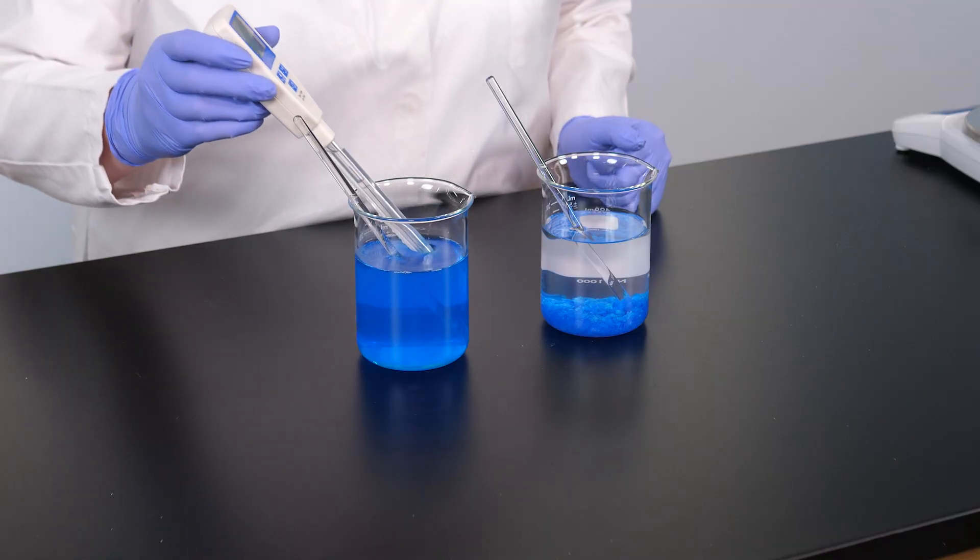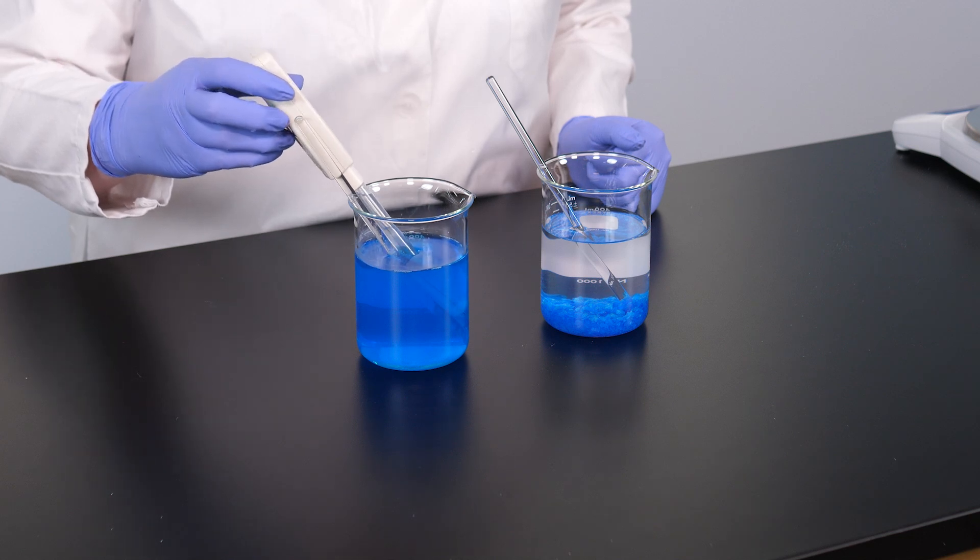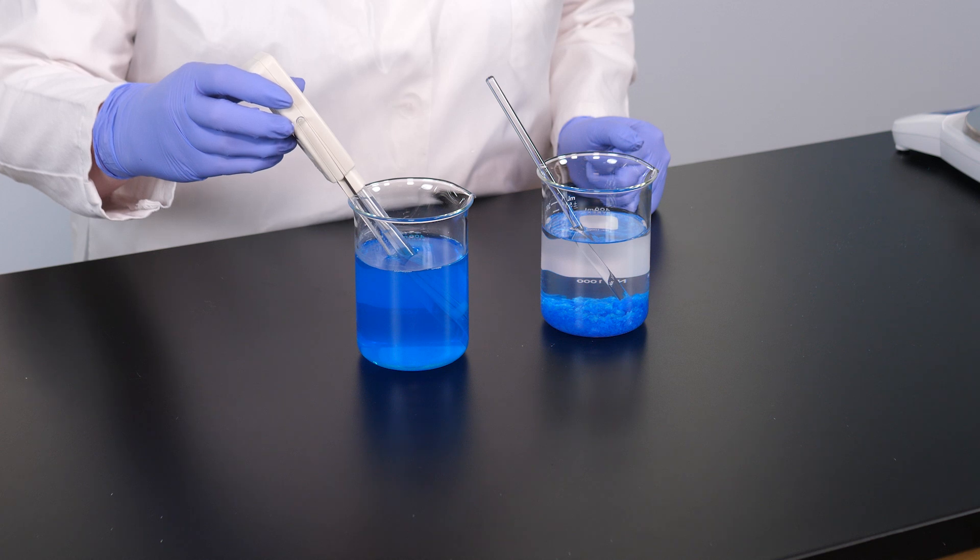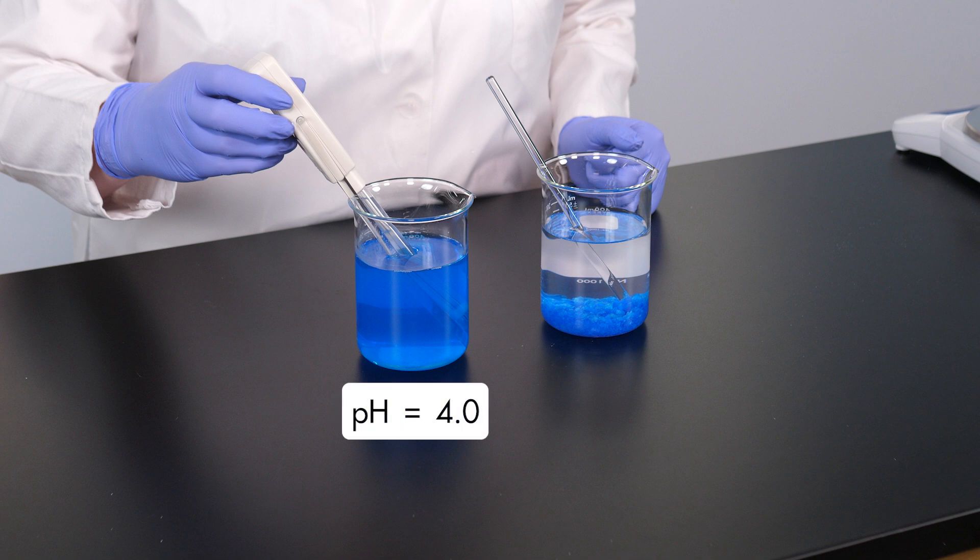Now, let's test the pH of the solution formed by dissolving the substance in water. We determine pH with a pH meter. The pH of the solution is 4.0, which is acidic.